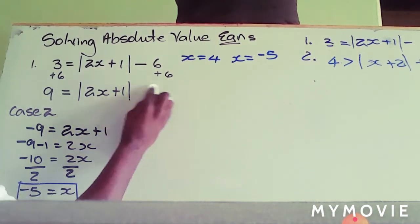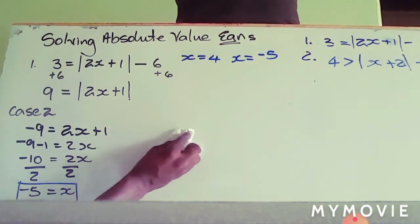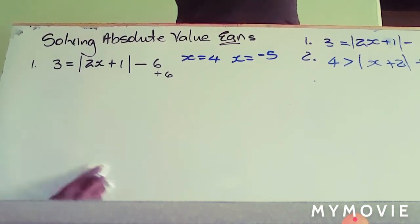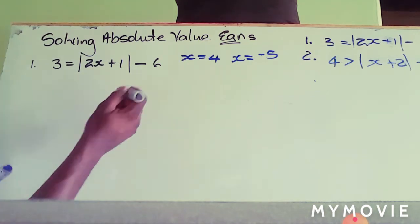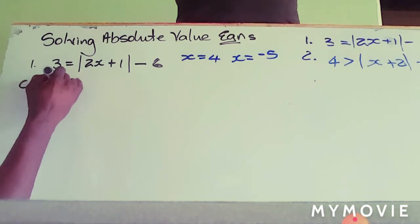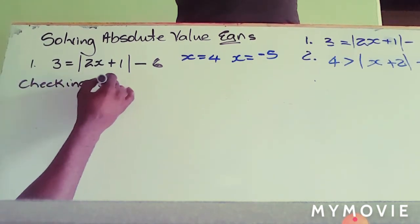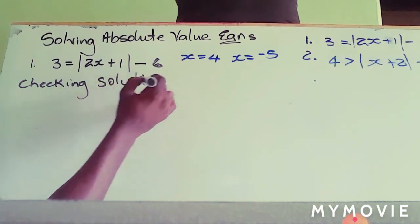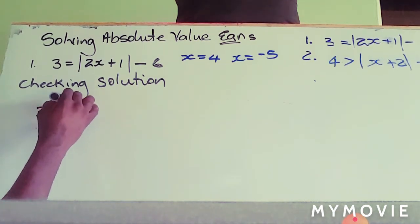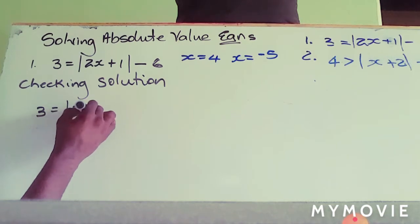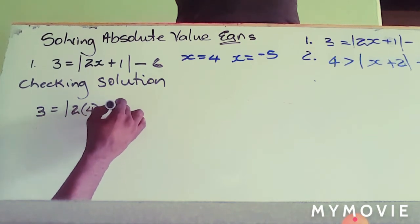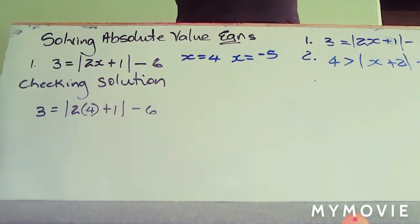Now we're going to verify — just to check our answers to see if those two responses produce the correct answer. We'll plug them back into the original equation. We're substituting four for x in the first case and negative five for x in the second case. So let's go — three is equal to the absolute value of two x plus one, substituting four where x is.